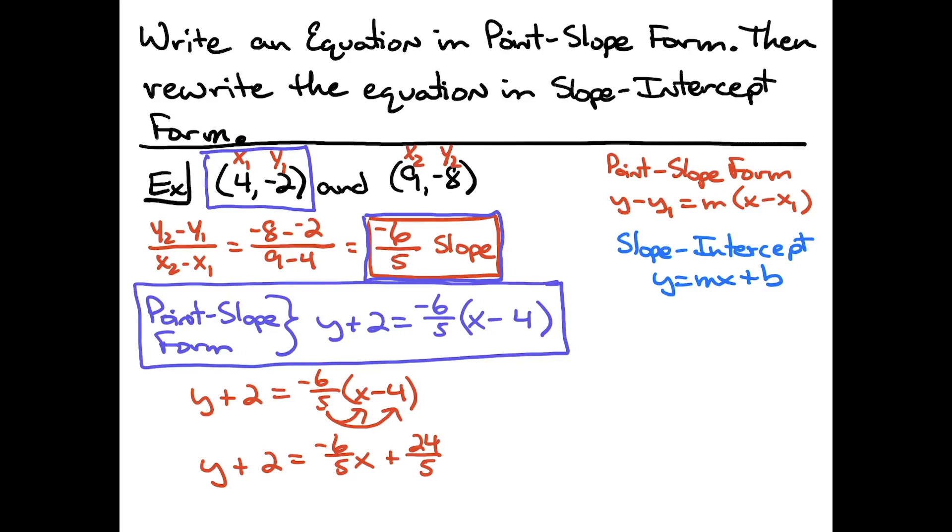Now at this point in time, I need to subtract 2 from both sides of the equation because for y equals mx plus b, everything has to be on the right-hand side of the equation. So I'm going to subtract 2, subtract 2, and then subtract 2. So coming up here, so I have a little bit more room here, I'm going to have y is equal to a negative 6 fifths x. Now I've got to subtract 24 over 5 minus 2.